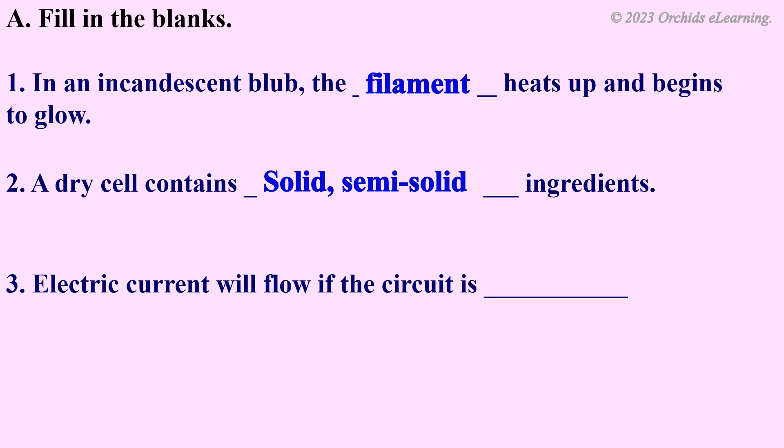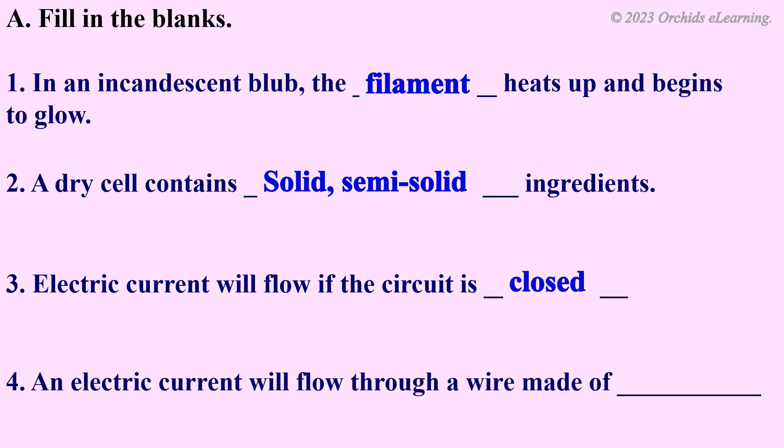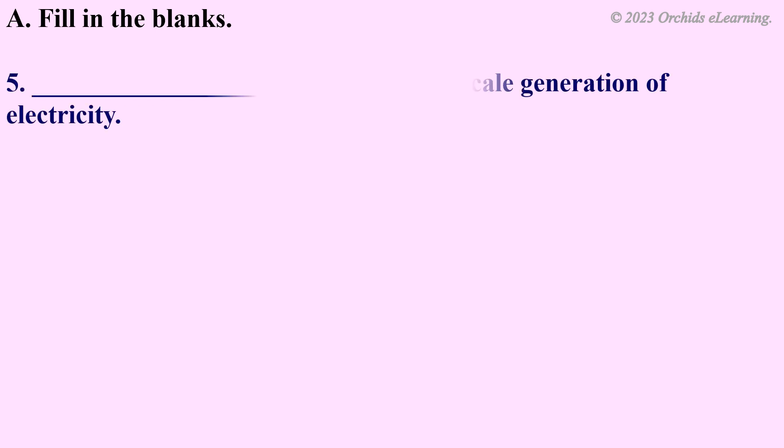will flow if the circuit is closed. An electric current will flow through a wire made of aluminum. Flowing water is used for large-scale generation of electricity.